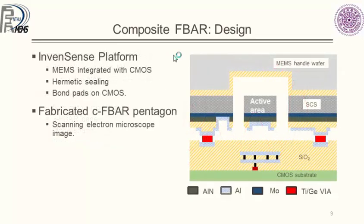This is the cross-section of the InvenSense fabrication platform. It consists of a MEMS handle wafer, a single crystal silicon active area, a bottom electrode, piezoelectric layer, and top electrode. The TIGE via is used for eutectic bonding between the MEMS and CMOS wafer, providing both an electrical connection and a hermetic seal. The bond pads are located on the CMOS wafer.